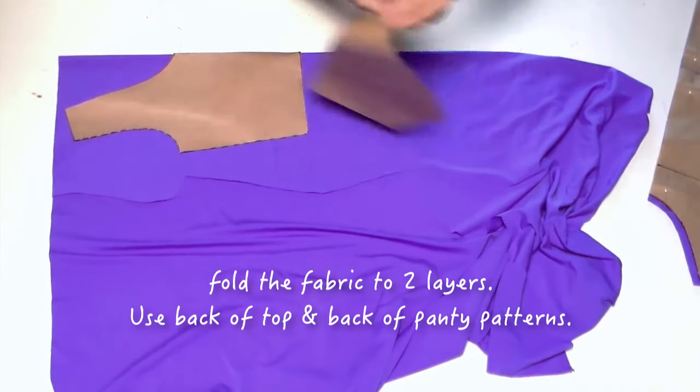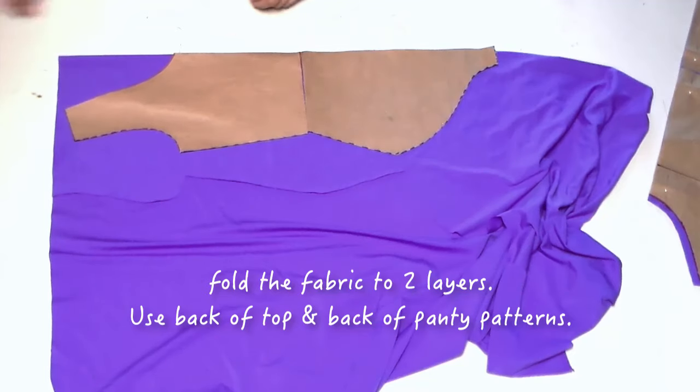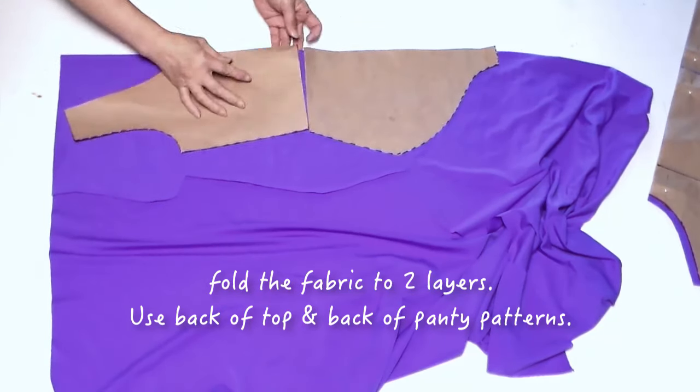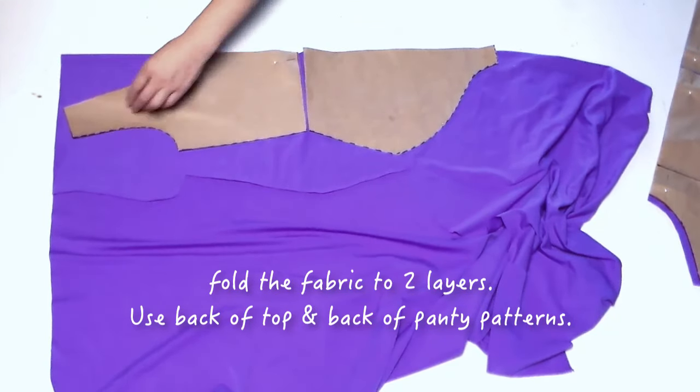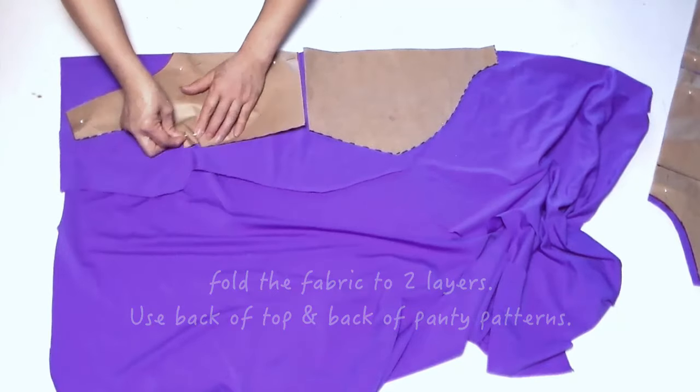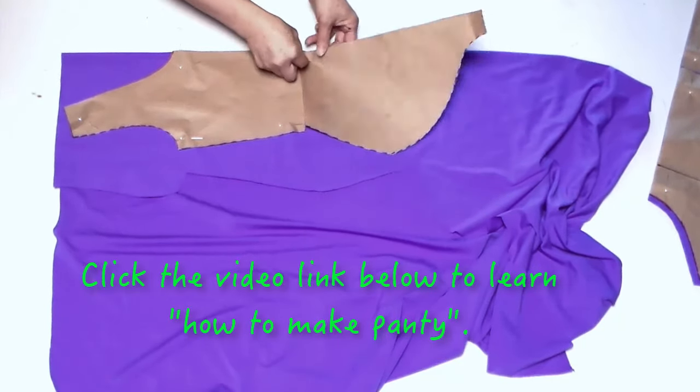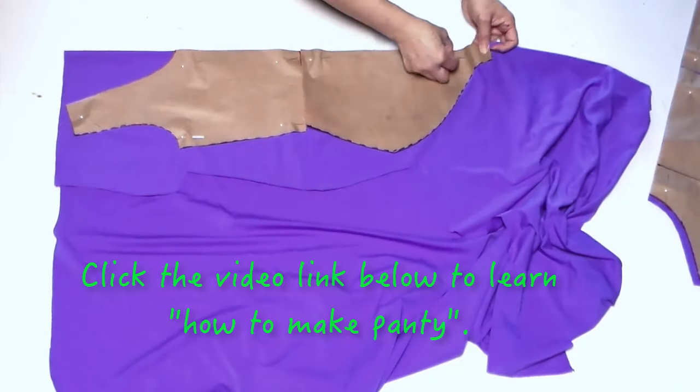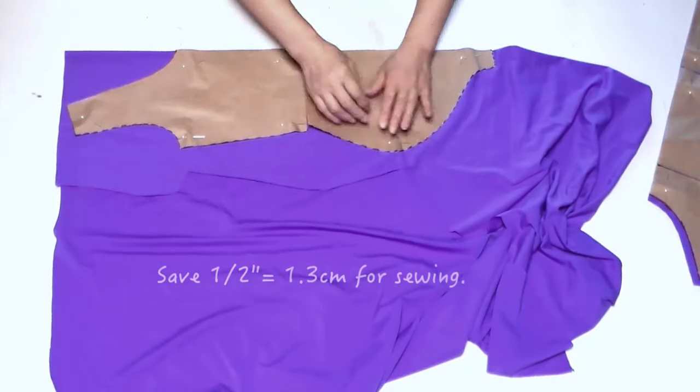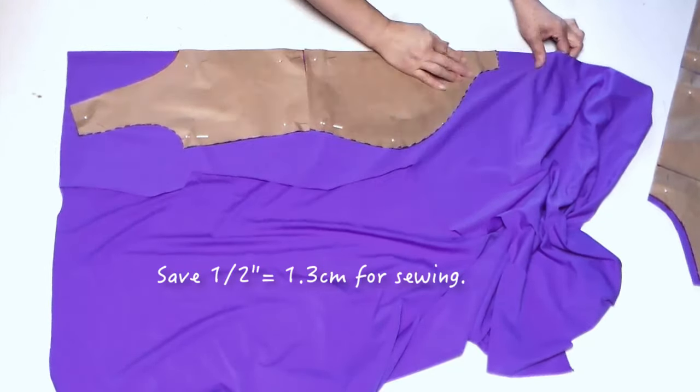Cut back of the leotard and double fold the fabric. Use the back of the top pattern and the back of the panty pattern. Make sure to save a half inch for sewing.